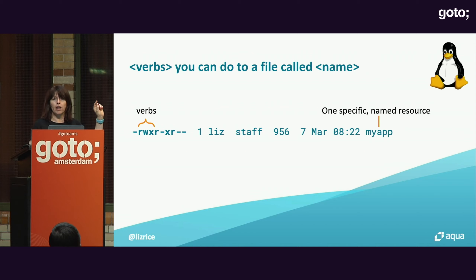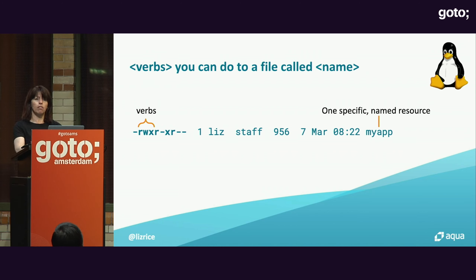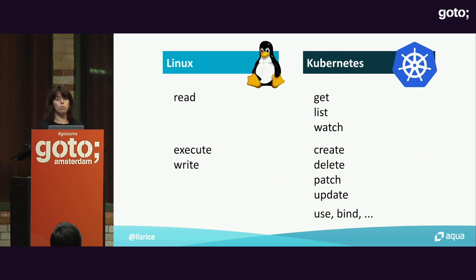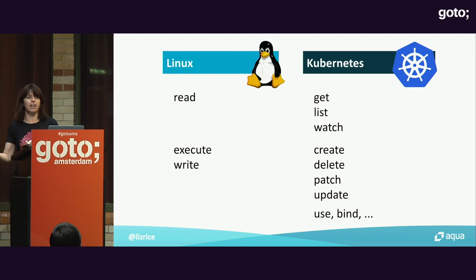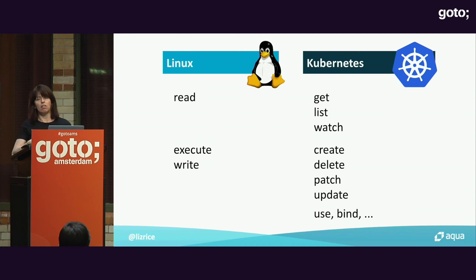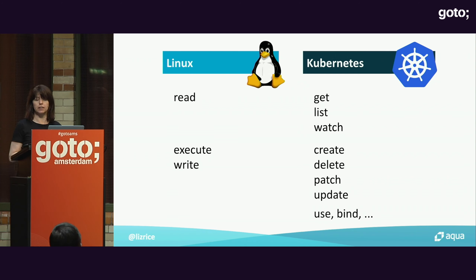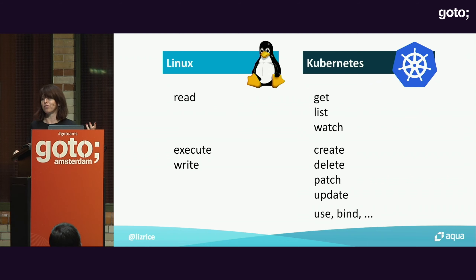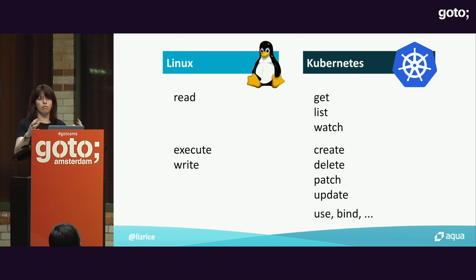In Linux, we're always looking at one particular named file. Whereas in Kubernetes, we can define roles to cover a whole class of objects. We also have many more verbs in Kubernetes: read-only verbs like get, list, or watch; writing verbs like create or delete. Execute arguably doesn't exist — we just create, update, or delete things. You can also define your own custom resources and custom verbs to act on those resources.